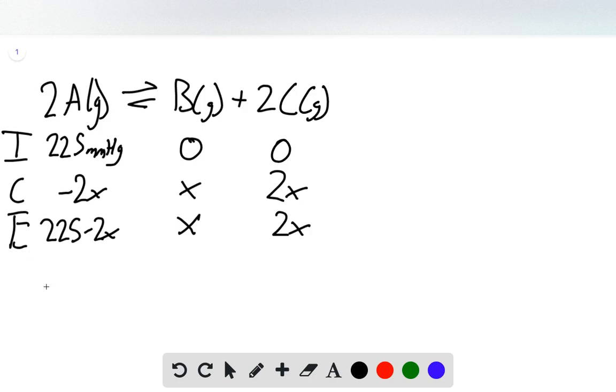So now we want to take our initial pressure and set it equal to our final pressure. And this is our equilibrium pressure, 225 minus 2X equals 55, and that's of our A. And when we do that, we get an X of 85 millimeters of mercury.